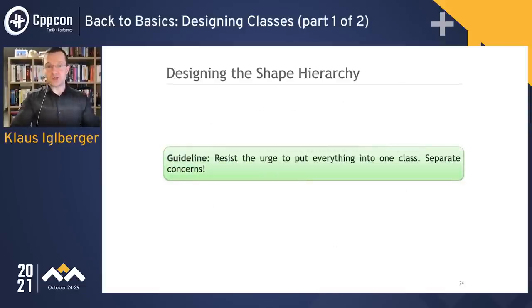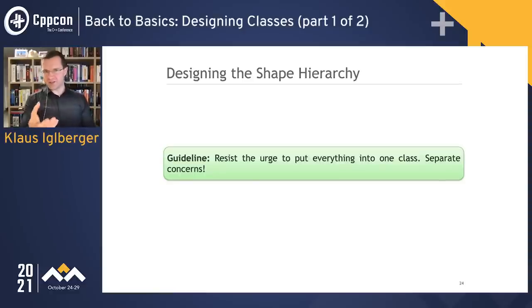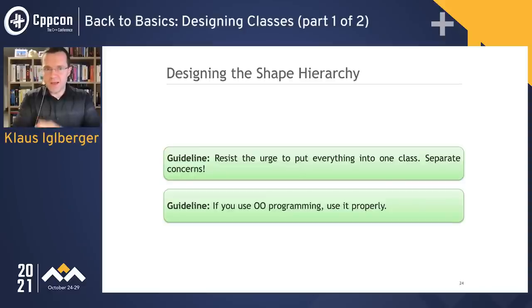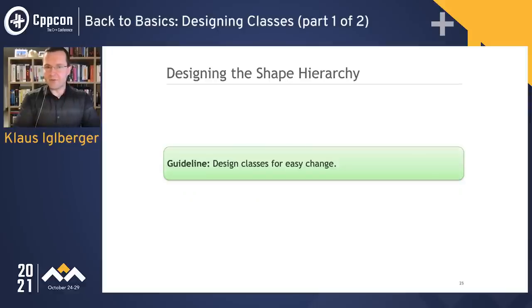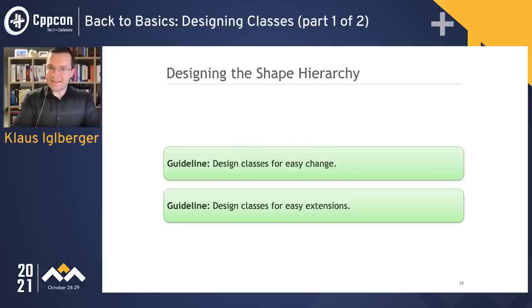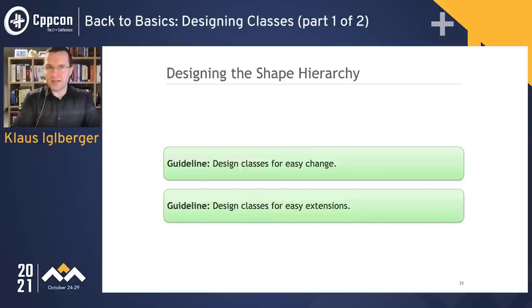First guideline: please resist the urge to put everything into one class. The secret ingredient is to separate concerns. If you use OO programming, please use it properly — there are definitely right ways to use that technique. Remember: design for easy change and design for easy extensions. That should be the driving motivator for virtually everything you design.